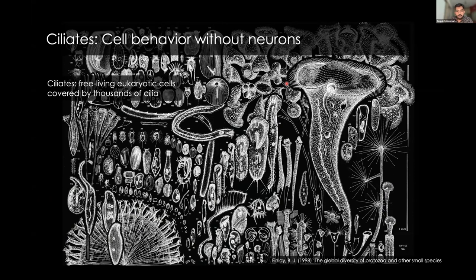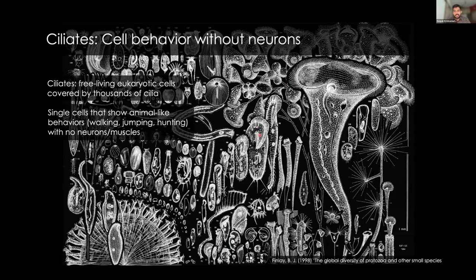We are going to be operating at a much, much smaller scale than an octopus — at the scale of single cells. Particularly, we're going to be thinking about single cells which are ciliates. These are free living eukaryotic cells which are covered by thousands of cilia. What is remarkable about them is that though they are single cells, they are capable of behaviors that one might ascribe to animals, such as walking, jumping, and hunting.